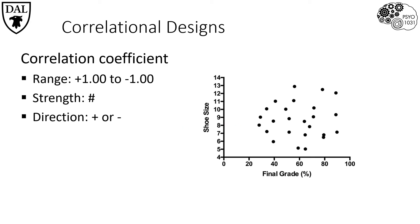This scatterplot is similar to the last one as the vertical Y axis shows shoe size. However, notice that the horizontal X axis is now different. The X axis now shows a person's final grade in a course.